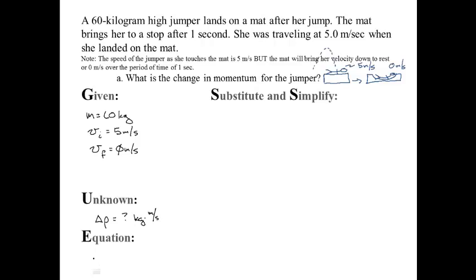So I will just take the change in momentum part of the formula and then I'll use the mass times velocity final minus velocity initial.